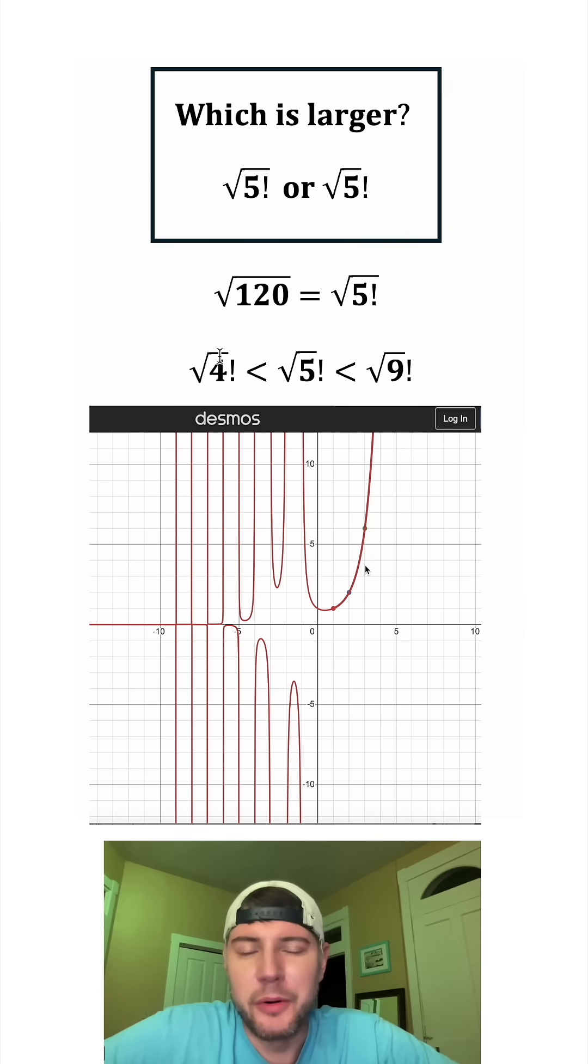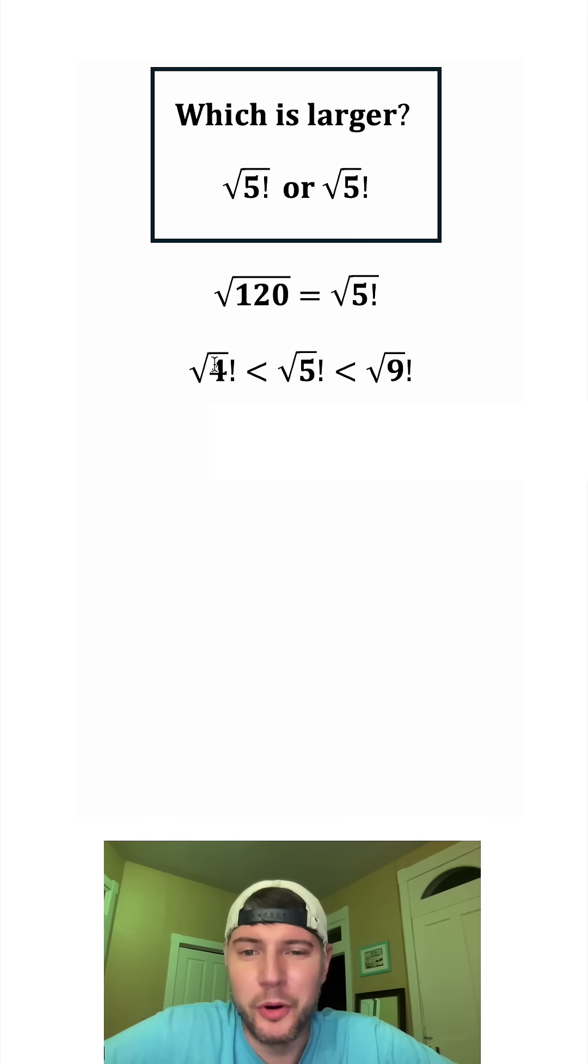We can say the square root of 4 factorial is less than the square root of 5 factorial is less than the square root of 9 factorial. And the square root of 4 is equal to 2. We can bring this part down. And square root of 9 is equal to 3.